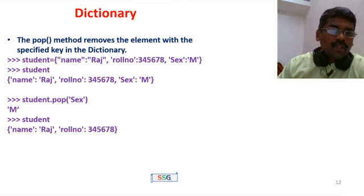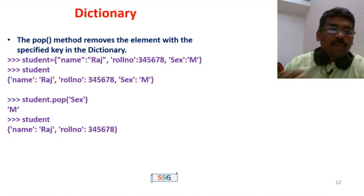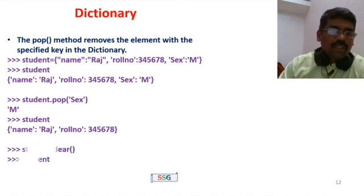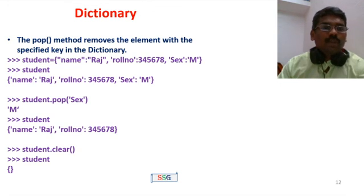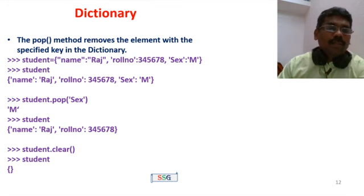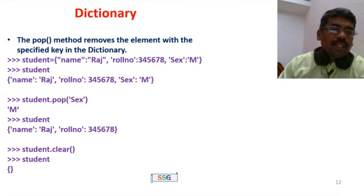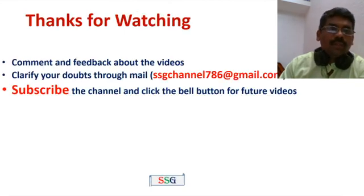To remove elements, print the student dictionary with the specified keys. After removing elements, the dictionary is updated. The clear() method clears all elements from the dictionary. After student.clear(), the dictionary becomes an empty curly brace — no data remains.